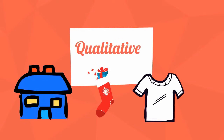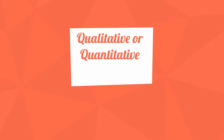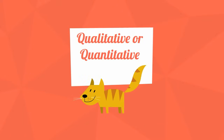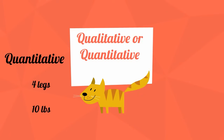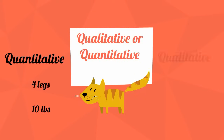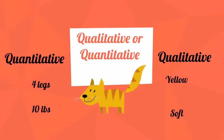Let's look at quantitative versus qualitative. Consider a cat. The quantitative data would be that the cat has 4 legs and weighs 10 pounds. The qualitative data would be that the cat is yellow and has soft fur.